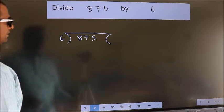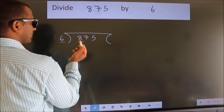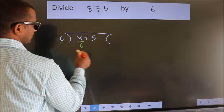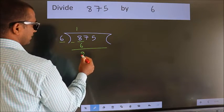Next, here we have 8, here 6. A number close to 8 in 6 table is 6 once 6. Now, we should subtract. We get 2.